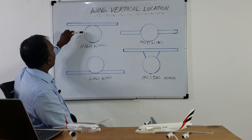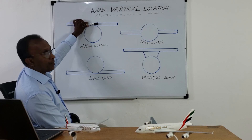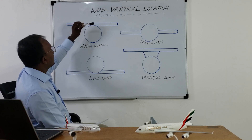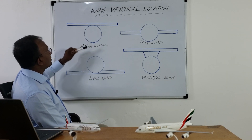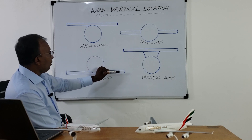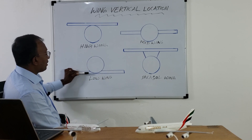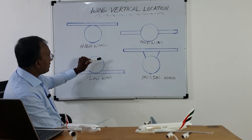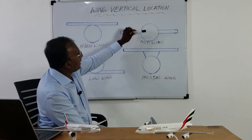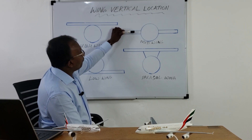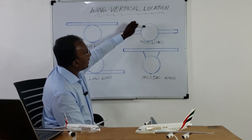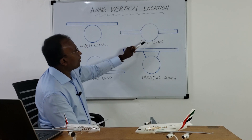If the wing is at the top of the fuselage, this is called a high wing. If the wing is at the lower position of the fuselage, it is called a low wing. And if the wing is attached to the mid of the fuselage, it is called a mid wing.